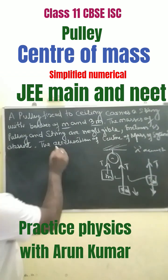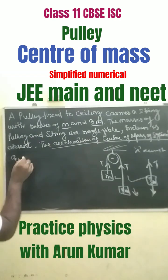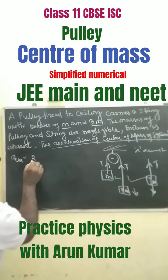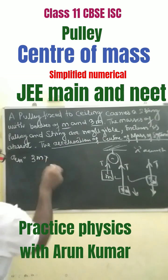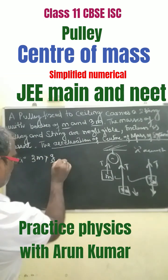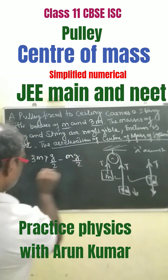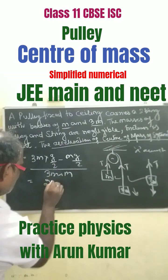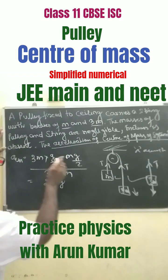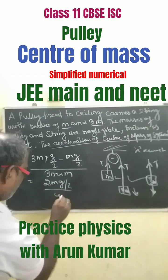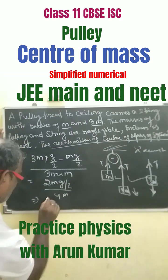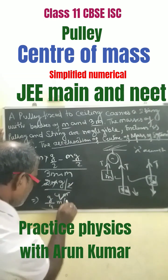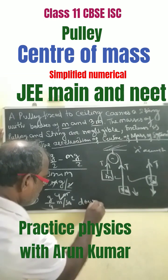Now we find the acceleration of the center of mass, A_CM, which equals net force divided by total mass. A_CM equals 3M times (g/2) minus M times (g/2), all divided by 3M plus M, which equals 2Mg divided by 2 divided by 4M, giving g/4 meters per second squared downwards.